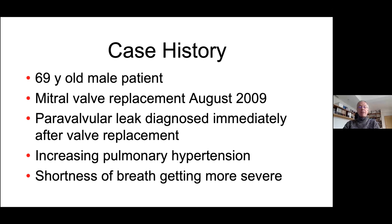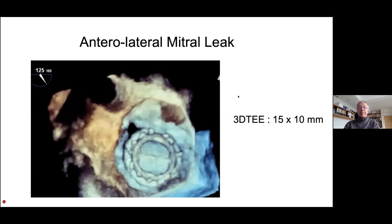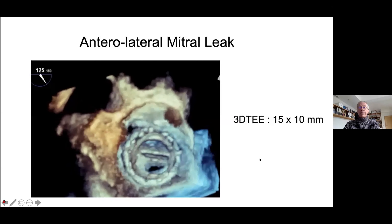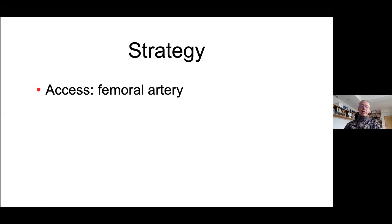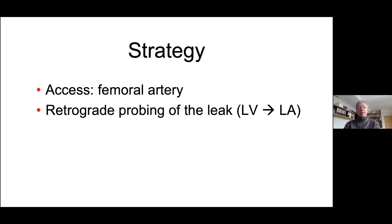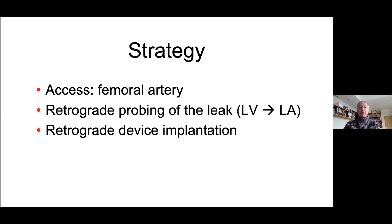It's a 69-year-old male patient. He had mitral valve replacement in 2009. A paravalvular leak was diagnosed immediately after valve replacement, during the hospital stay of the surgery. He's suffering from increasing pulmonary hypertension and shortness of breath becoming more severe over time. The leak is measured at 15 by 10 millimeters in 3D echo, which is actually a pretty big hole for a paravalvular leak. My preferred strategy is to come from the femoral artery, go to the left ventricle, and then try retrograde probing of the leak from the left ventricle to the left atrium, and then retrograde device implantation.